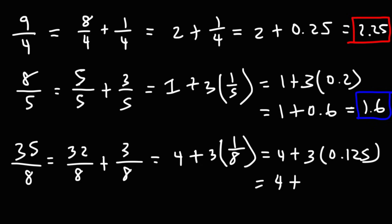So what's 3 times 0.125? 125 times 3, what is that? 100 times 3 is 300. 25 times 3 is 75. So 125 times 3 is 375. So 3 times 0.125 is 0.375. So we'll get this answer. 35 over 8 will be 4.375.